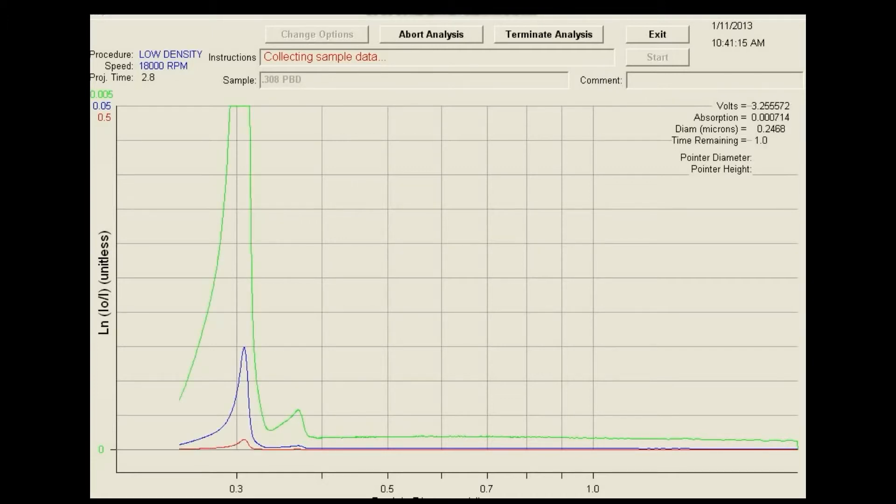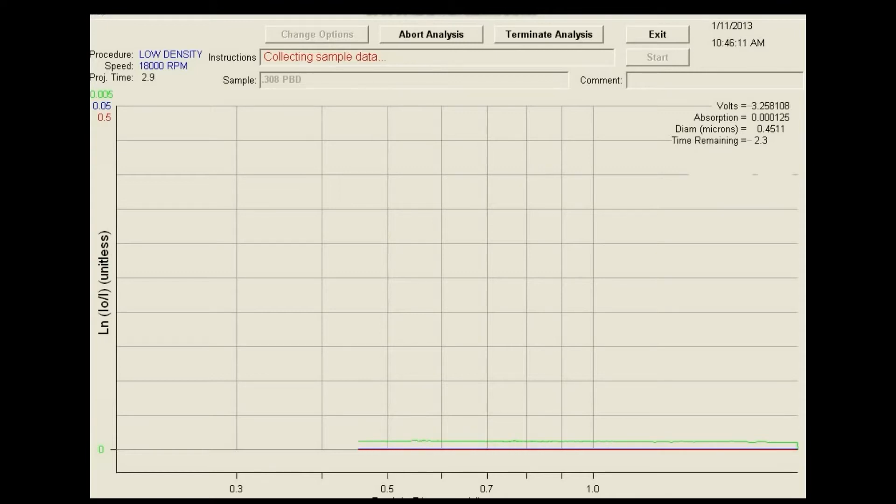The CPS disc centrifuge allows the measurement of highly polydispersed particles within an approximate size range of 3 nanometers to 60 microns depending on particle density. The CPS can measure particles with as little as 2% size difference from one another.